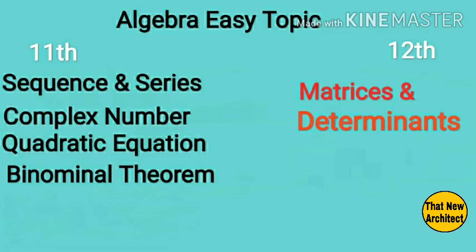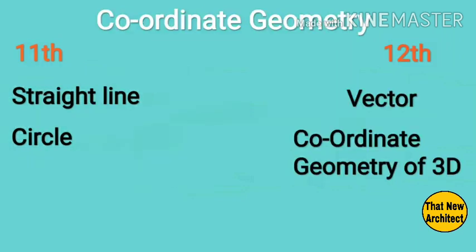Algebra mein sabse easy hai Matrices and Determinants. Aur 11th mein Sequence and Series mein se do questions must aayenge — toh 1 chapter karne se do questions ho jayenge. Complex Numbers, Quadratic Equations, and Binomial Theorem mein utne tough questions nahi aate. Agar isse achhe se practice karo toh coordinate geometry mein bhi acha kar sakte ho.